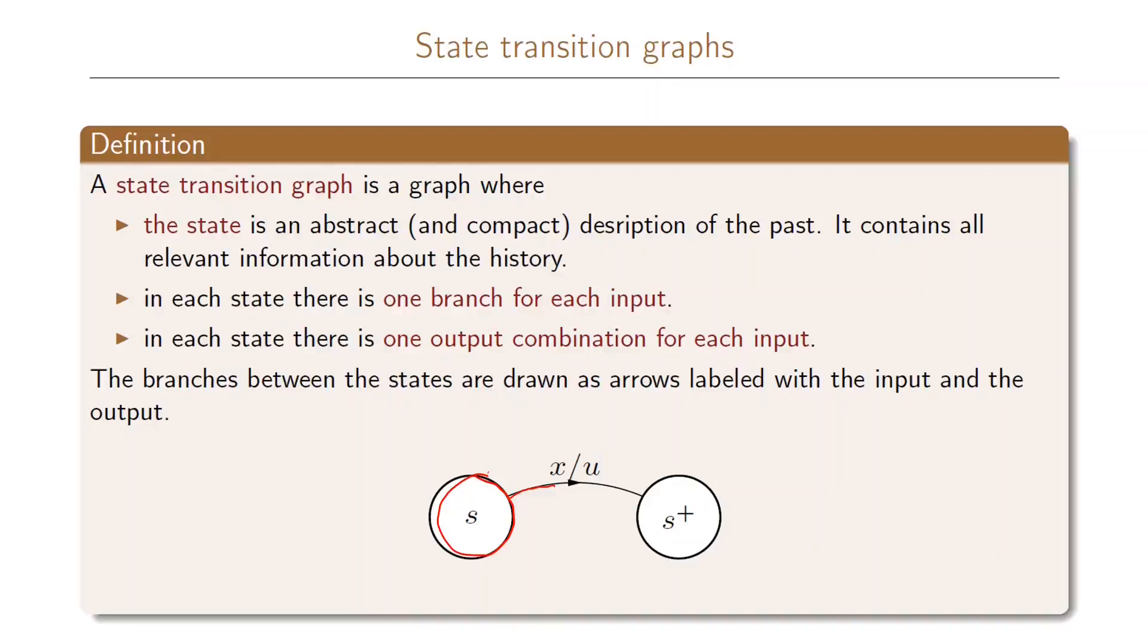Also for each state there is one output combination for each of the possible inputs. In this case we have for the state s when we have the input x, we have the output u, and when we go to the next state we go to the state that we denote by s plus.